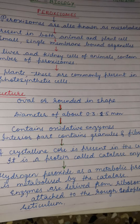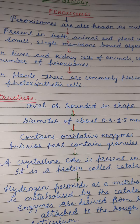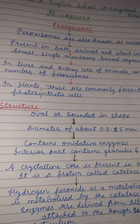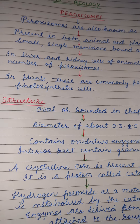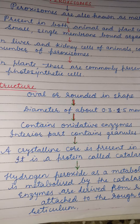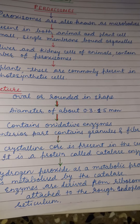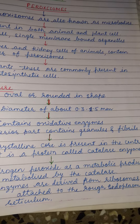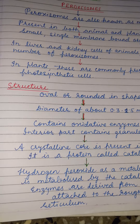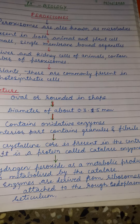Now let's see the structure. They are oval or round in shape. Their diameter is about 0.3 to 1.5 micrometers. They contain oxidative enzymes. The interior part of the peroxysome contains granules and fibrils, and there is the presence of a crystalline core in the center.